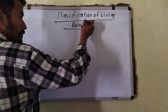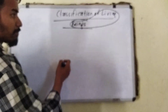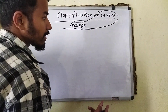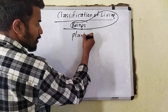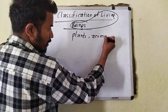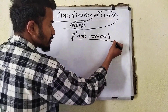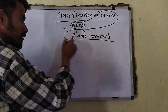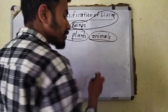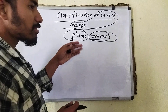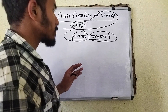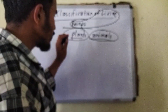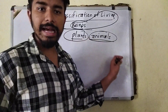In case of living beings, they are of two types: first one, plants; next one, animals. We have two kingdoms. On the basis of their physical properties and their survival, they are divided into two kingdoms: the plant kingdom and the animal kingdom.